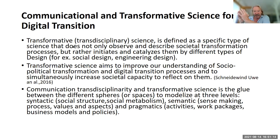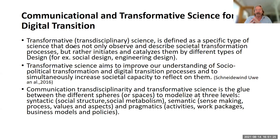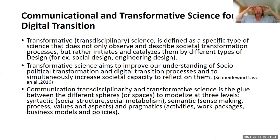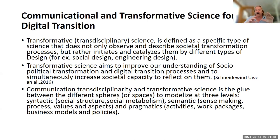Transformative science and transdisciplinary science aim to improve our understanding of social systems, political transformation, and digital transformation processes, to simultaneously increase societal capacity to reflect on them. Communication, transdisciplinarity, and transformative science are situated between different spheres or spaces: digital spheres, psychological space. We appropriate the world through our senses and build social space, then cyberspace, then robotic space, and then the noosphere as in the fields of Edgar Morin and Teilhard de Chardin.